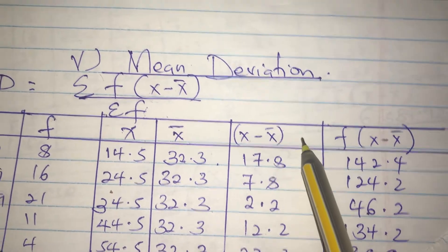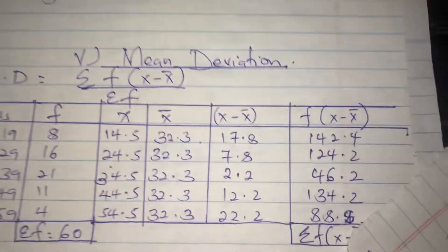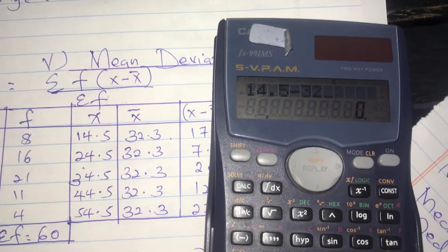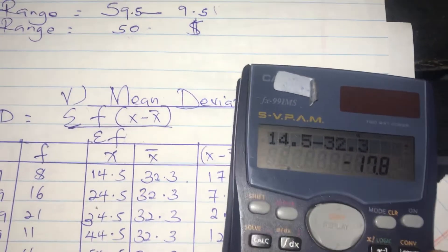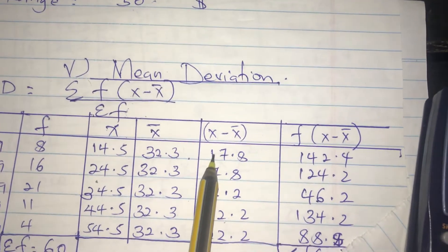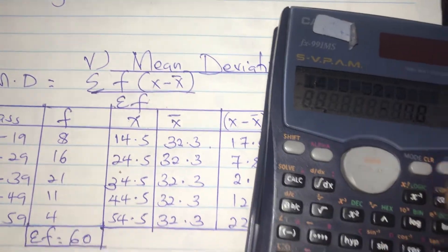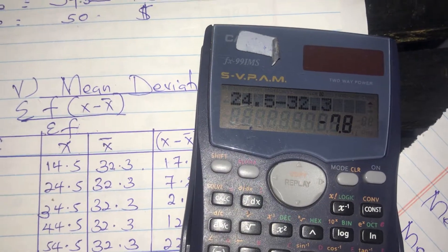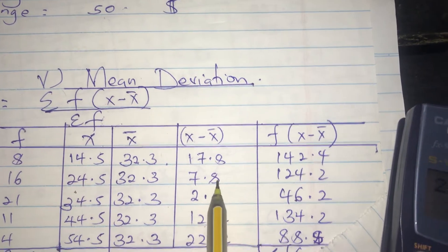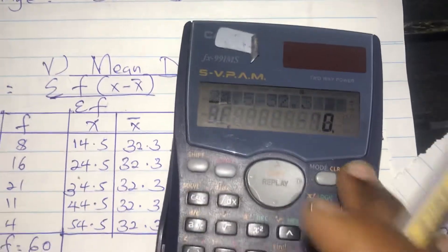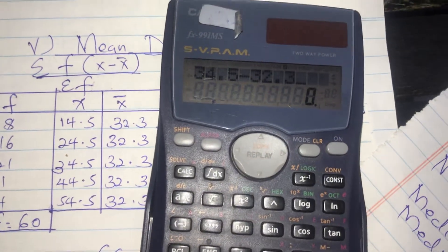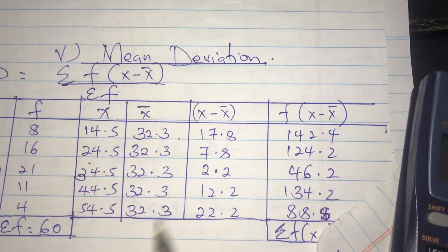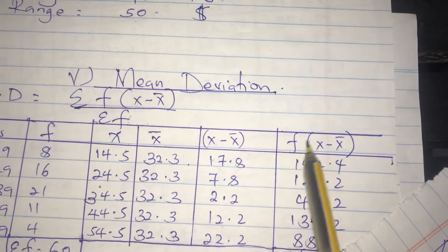For the column of x minus x̄, we subtract x̄ from each x value. The first one is 14.5 minus 32.3, which is negative 17.8 — but we ignore the negative sign, so we write 17.8. The next is 24.5 minus 32.3, giving negative 7.8, so we put 7.8. Then 34.5 minus 32.3 gives 2.2. We do the same for the remaining rows.